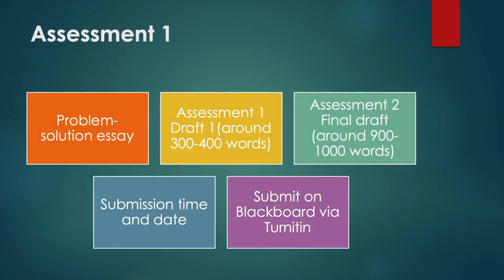Some reminders: Assessment 1 is a problem-solution essay. For draft 1 you have to write between 300 and 400 words, while for the final draft, Assessment 2, you have to write around 900 to 1000 words. Please check Blackboard for the due date, or ask your teacher. Remember you need to submit the assessments on Blackboard via Turnitin.